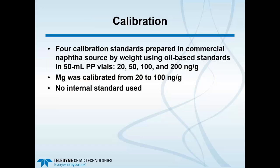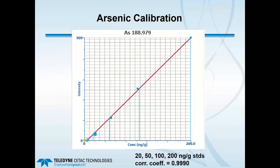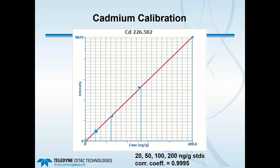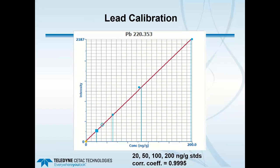For calibration, four standards were prepared in polypropylene vials at 20, 50, 100, and 200 nanograms per gram. Magnesium was calibrated from 20 to 100 nanograms per gram. No internal standard was used. Examples of the calibrations: arsenic at the 188.979 nm line had a correlation coefficient of 0.990; cadmium at 0.995; and lead also at 0.995. So three of the important elements — arsenic, cadmium, and lead — could easily be calibrated at part-per-billion levels in the solid by weight.